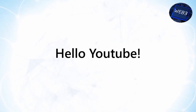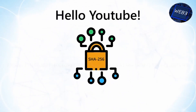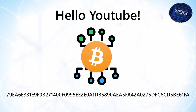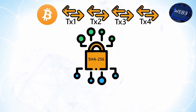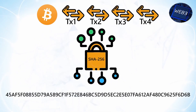In simple terms, hashing means taking an input of any length and returning an output of fixed length. In the context of cryptocurrencies like Bitcoin, transactions are taken as an input and run through a hashing algorithm that returns an output of a fixed length.